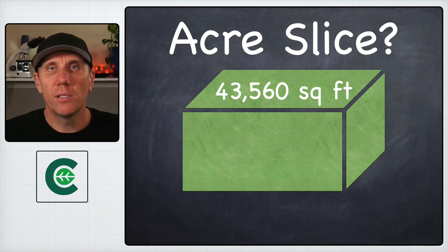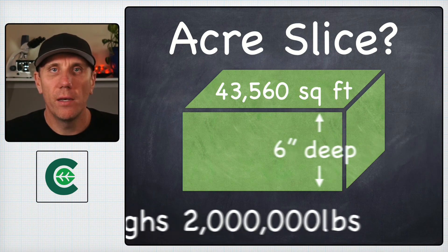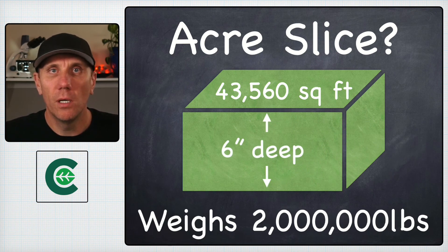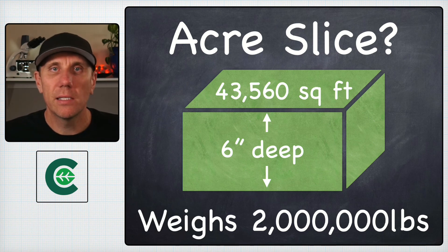When the lab is analyzing a soil test, they want to report the values in pounds per acre and they're assuming that the average soil of an acre slice, 43,560 square feet, six inches deep, weighs two million pounds.